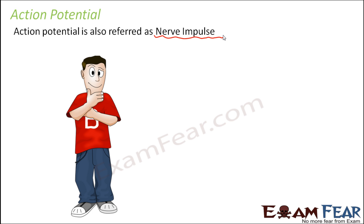What would happen if the neuron is excited? If somebody touches you or pinches you, the neuron gets excited and carries that information to the brain. The information is carried in the form of nerve impulses, that is, in the form of action potentials. These action potentials are actually moving from one neuron to another.